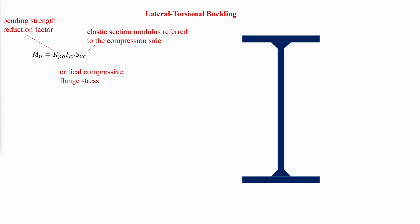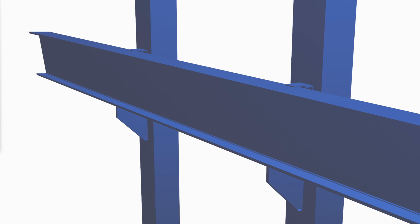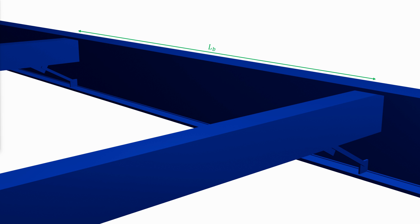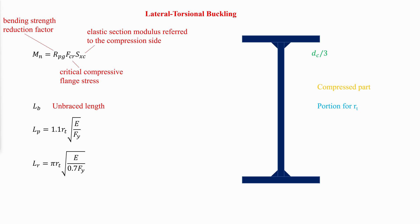The nominal lateral torsional buckling strength is given by the same equation as compression flange strength; however, the critical stress is computed differently and depends on the unbraced length rather than the slenderness ratio. The unbraced length defines the frequency of lateral support and determines whether lateral torsional buckling will occur. It is the distance between points along the length of the girder where the top and bottom flanges are restrained from moving laterally relative to each other. The limiting length parameters for lateral torsional buckling are LP and LR, where RT is the radius of gyration about the weak axis for a portion of the cross section consisting of the compression flange and one-third of the compressed part of the web.